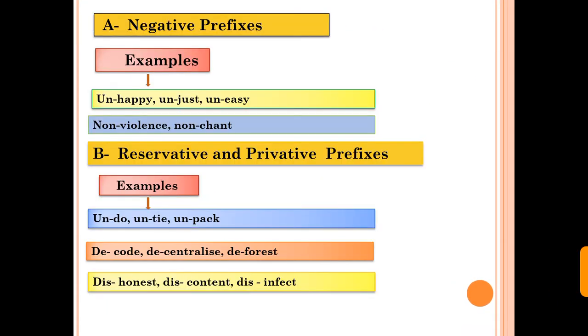The first here is the list of negative prefixes. While adding the negative prefixes, it gives the negative meaning. For example, happy, its opposite is unhappy. Happy, unhappy, just, unjust, easy, uneasy. Non is also a negative prefix. It adds before violence, so it became non-violence.